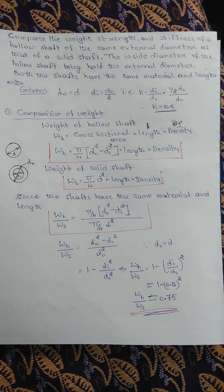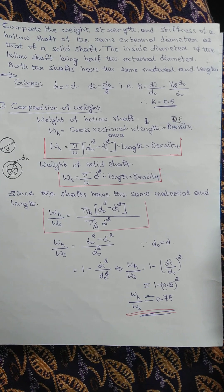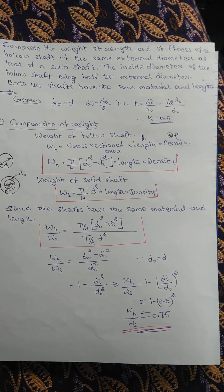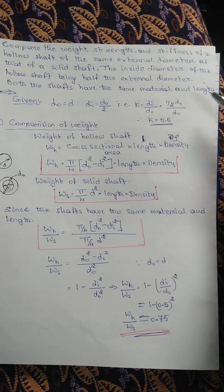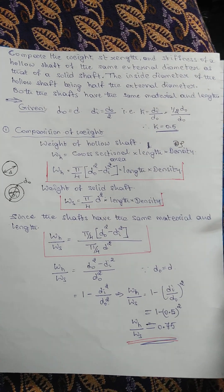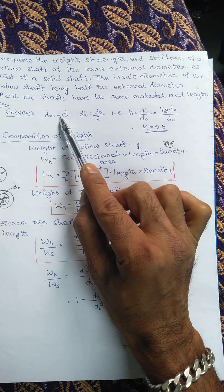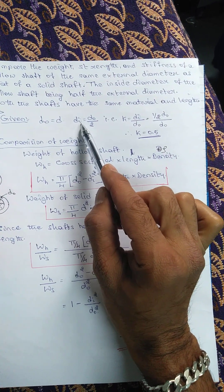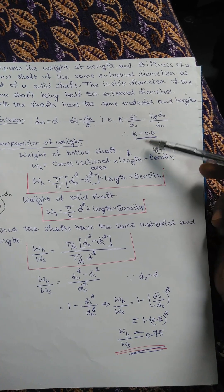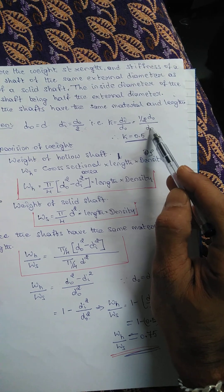This is an example problem on design of shafts. We are asked to compare the weight, strength, and stiffness of a hollow shaft with a solid shaft. The inside diameter of the hollow shaft is half of the outside diameter. The material and length are the same for both shafts. K is the ratio of inside to outside diameter: K = d_i / d_o = (0.5 * d_o) / d_o = 0.5.